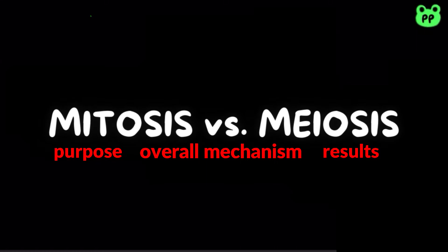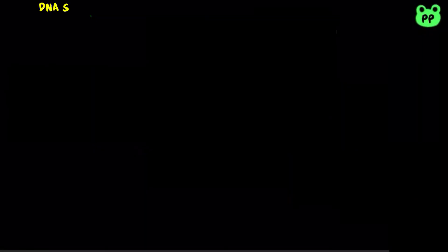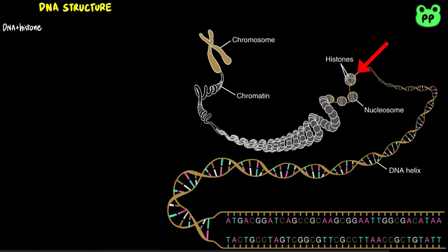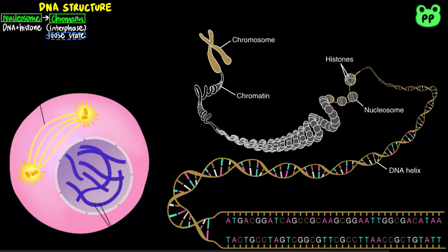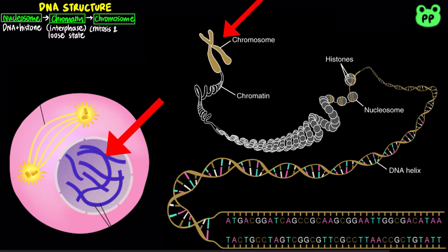Detailed mechanism of mitosis has been covered in my video on the cell cycle. Before diving into the comparison, we first need to understand some key terms. Eukaryotic DNA is wrapped around proteins known as histones, forming beads on a string called nucleosomes. Nucleosomes are further compacted into chromatin fiber in order to fit in the nucleus. Throughout interphase, which is 90% of the cell cycle, chromatin remains in a relatively loose disordered state. During prophase of both mitosis and meiosis, chromatin coils to form a condensed structure known as a chromosome in order for cell division to take place.